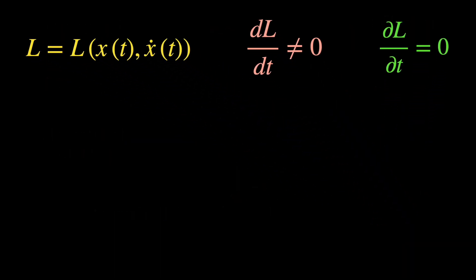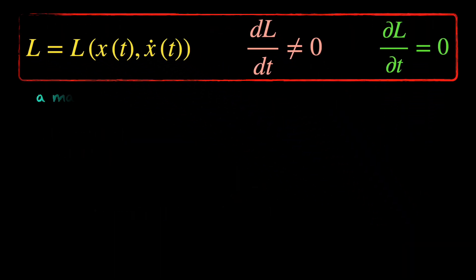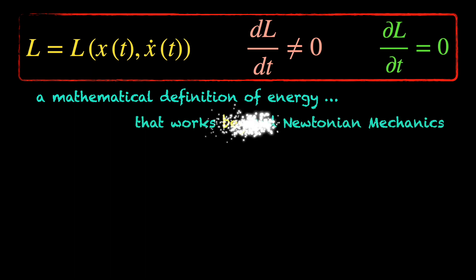This information about the Lagrangian of the system will help us obtain a mathematical definition for the energy of the system in terms of its Lagrangian. Like the generic definition of momentum we did earlier, this definition of energy will also work for systems which are beyond the scope of Newtonian mechanics. Let's see.